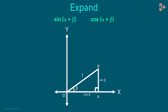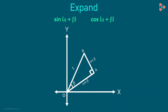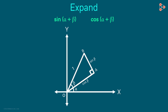Now let's rotate this triangle counter-clockwise by alpha. This is the new position of the triangle. This angle is alpha now — remember, we rotated the triangle by alpha. We drop a perpendicular from this vertex of our right triangle to the x-axis, and we get this right triangle.